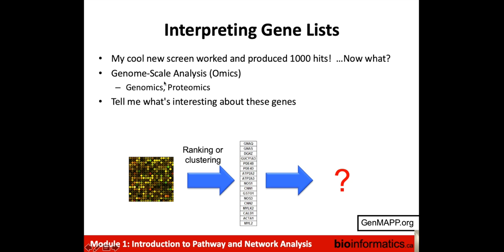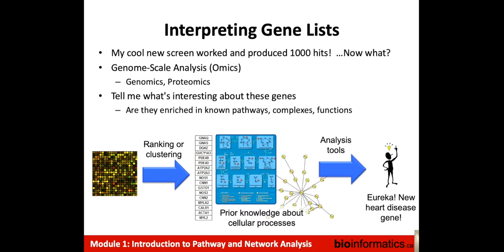Typically, any kind of genome scale analysis or omics — such as genomics, proteomics, RNA-seq, transcriptomics, et cetera — produces lots of information like this. And one of the main ways that people interpret this data is by trying to understand some mechanistic story that pulls these things together.